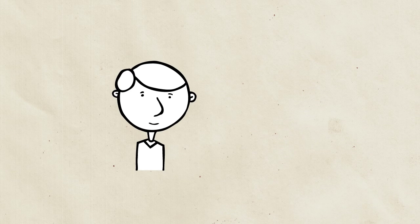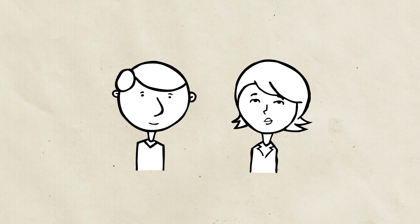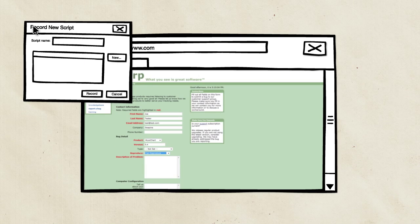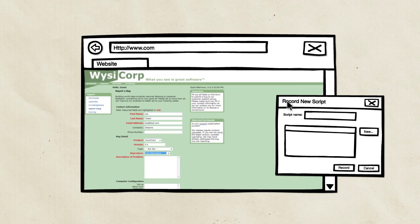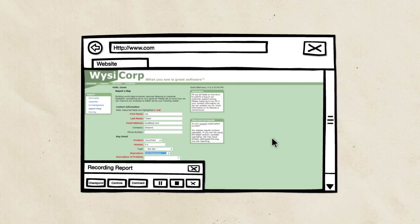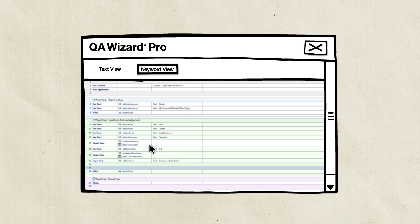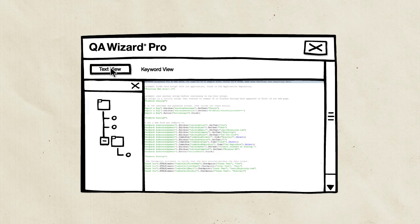QA Wizard Pro is engineered for testers and developers. With one click of the button, QA Wizard creates a script by recording your on-screen actions. Once a script is created, changes and updates can be re-recorded or made using standard drag-and-drop actions from the keyword view. More advanced users can take advantage of text view to code a script from the ground up or make changes and updates to the script later.